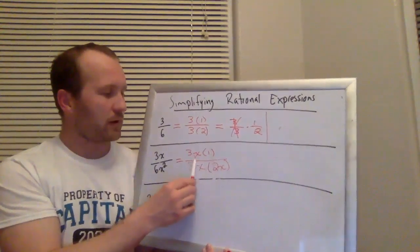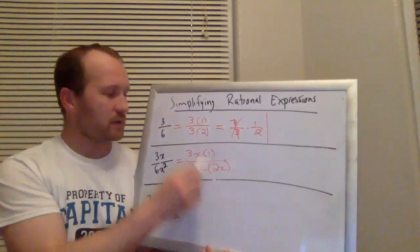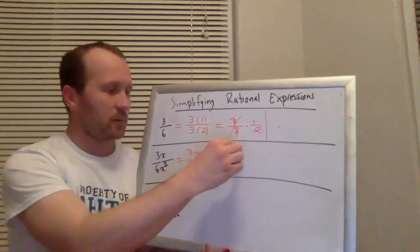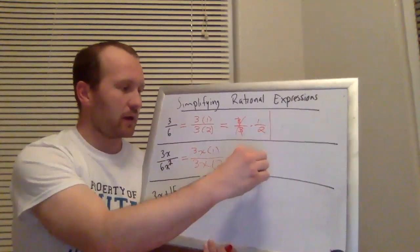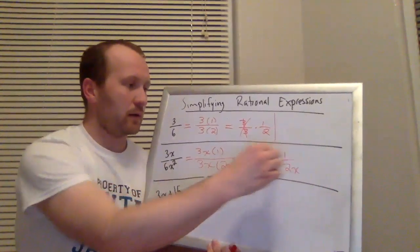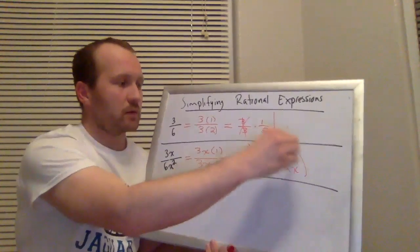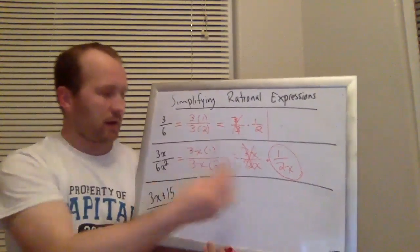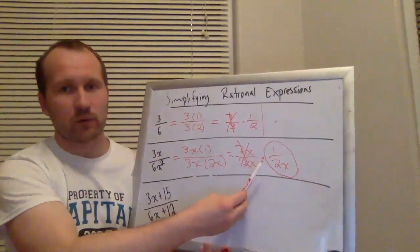Now 3x times something, 3x times something, this could be rewritten as 3x over 3x times 1 over 2x. And this would just cancel. So if I were simplifying this, I could simplify it down to 1 over 2x.